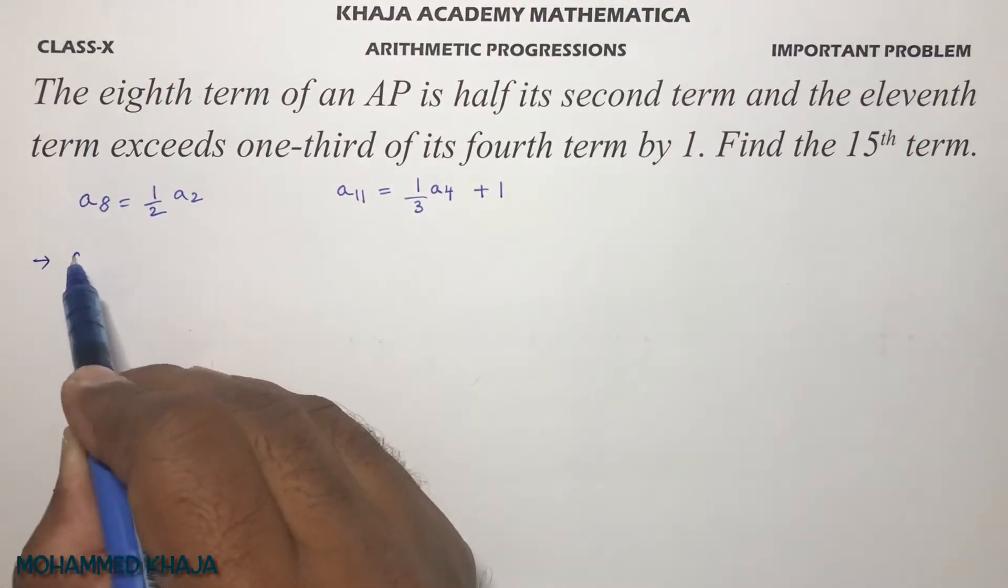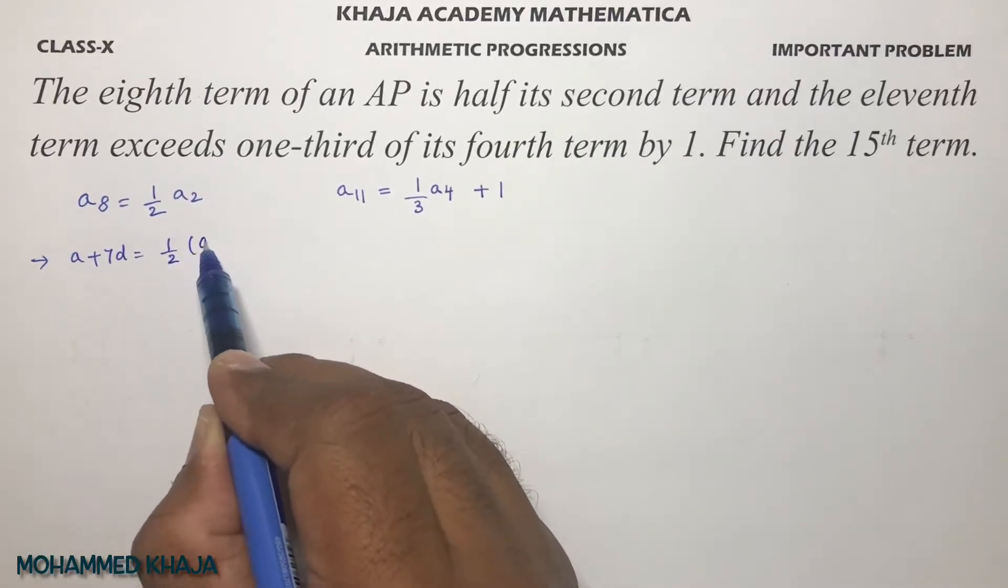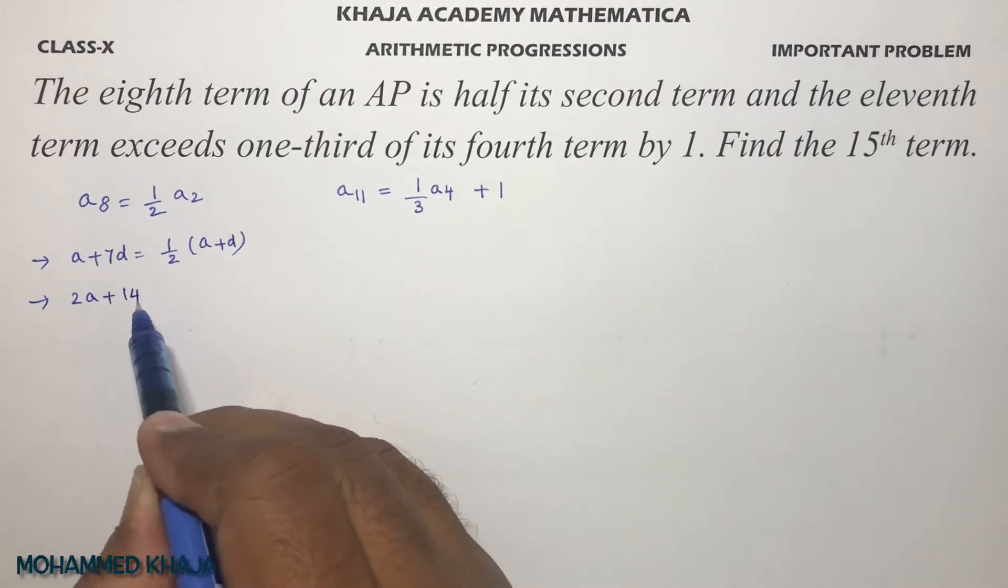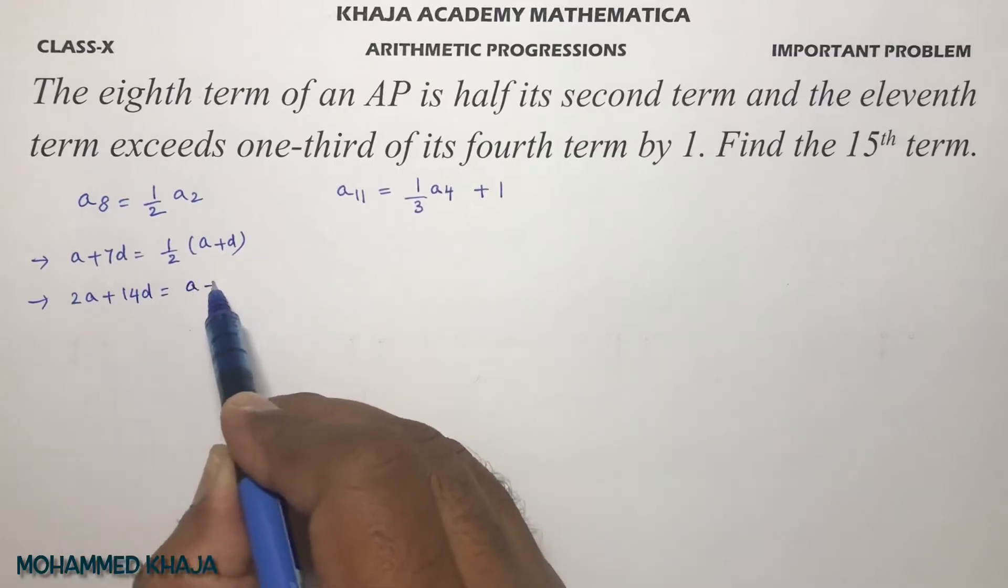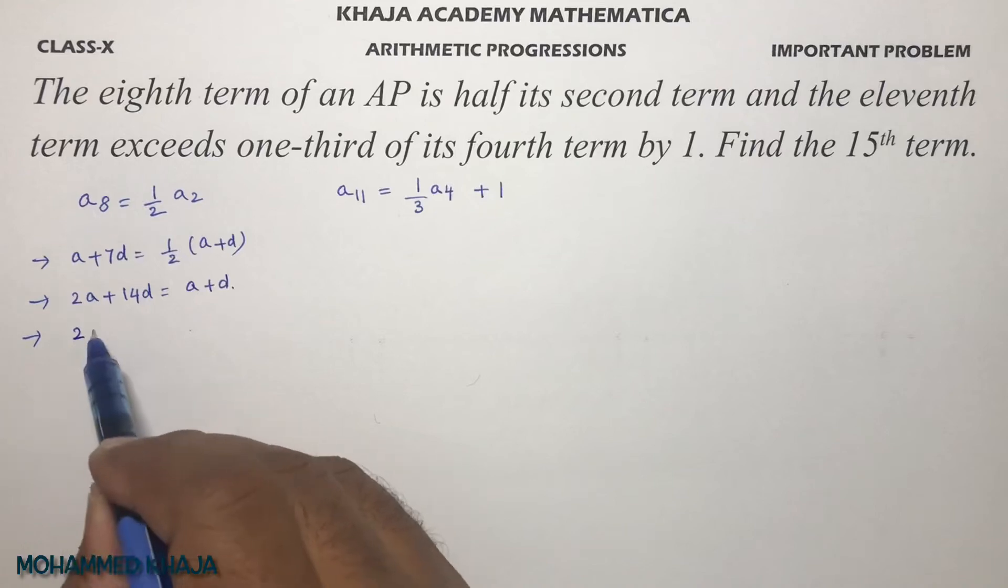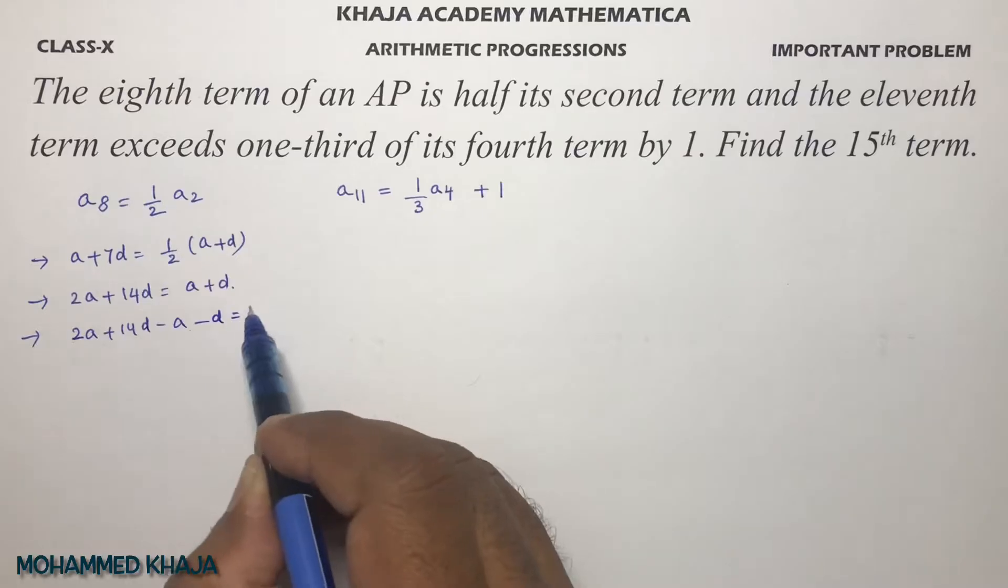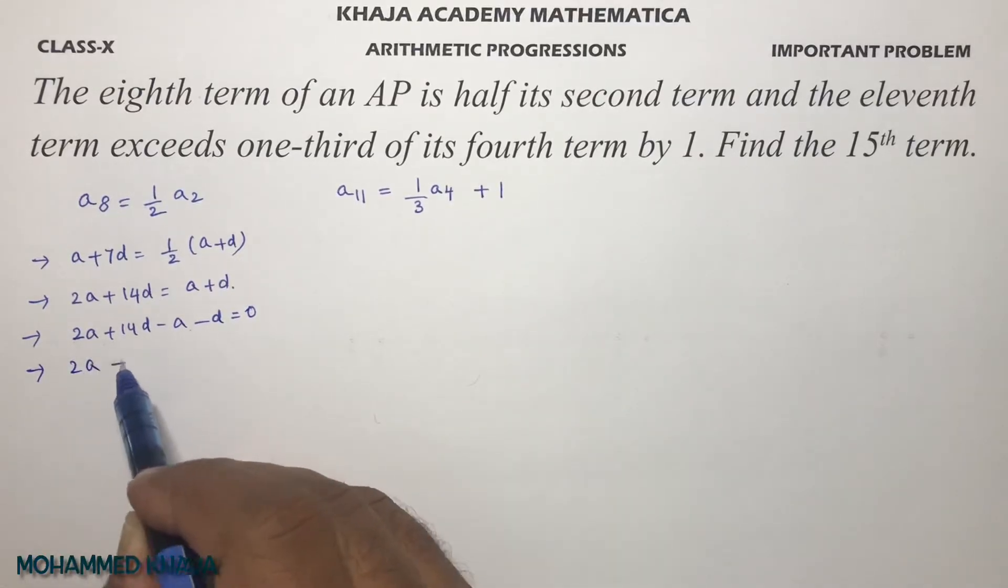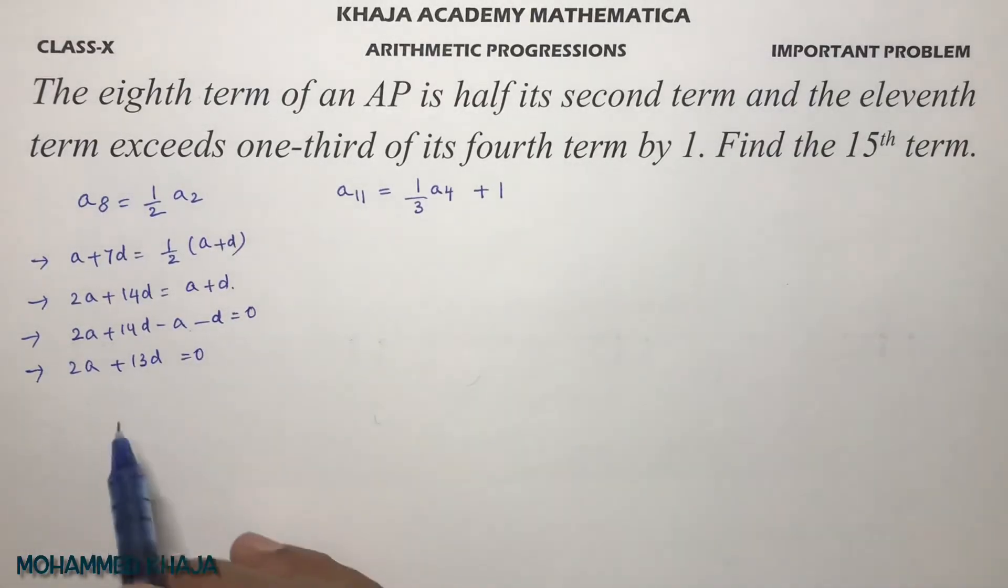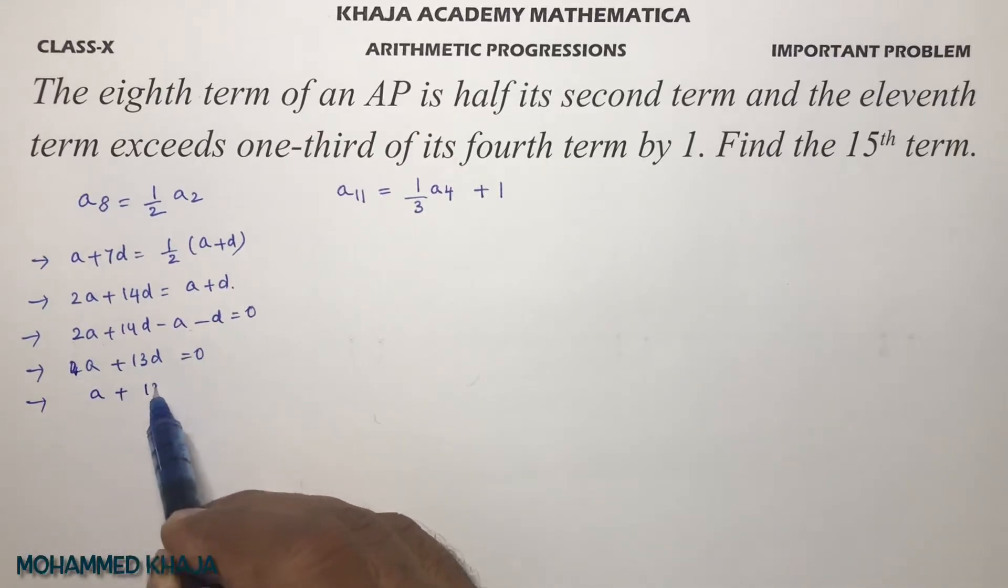a₈, which is a plus 7d, equals half of a₂, which is a plus d. Cross multiply: 2a plus 14d equals a plus d. Therefore 2a plus 14d minus a minus d equals 0, which simplifies to 2a plus 13d equals 0. This becomes a plus 13d equals 0.